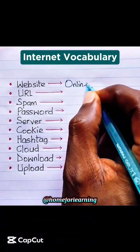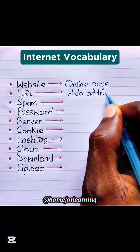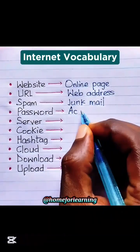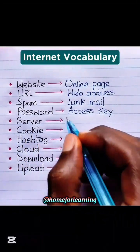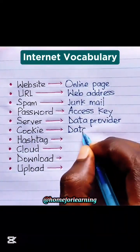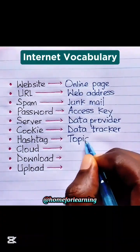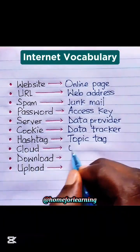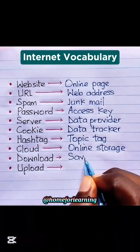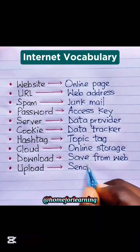Website: Online Page. URL: Web Address. Spam: Junk Mail. Password: Access Key. Server: Data Provider. Cookie: Data Tracker. Hashtag: Topic Tag. Cloud: Online Storage. Download: Save From Web. Upload: Send To Web.